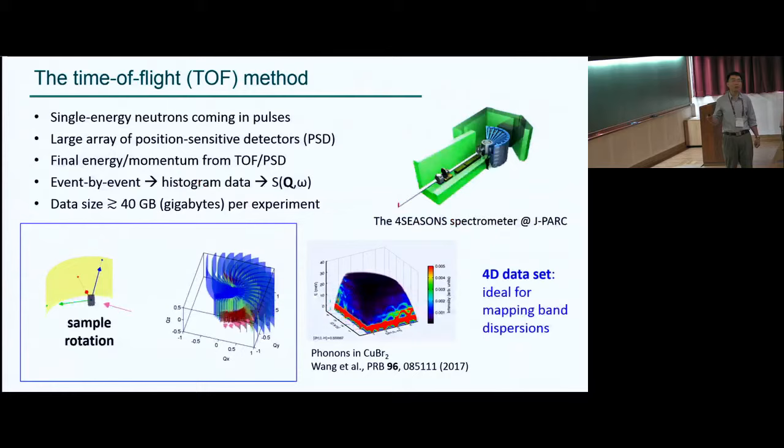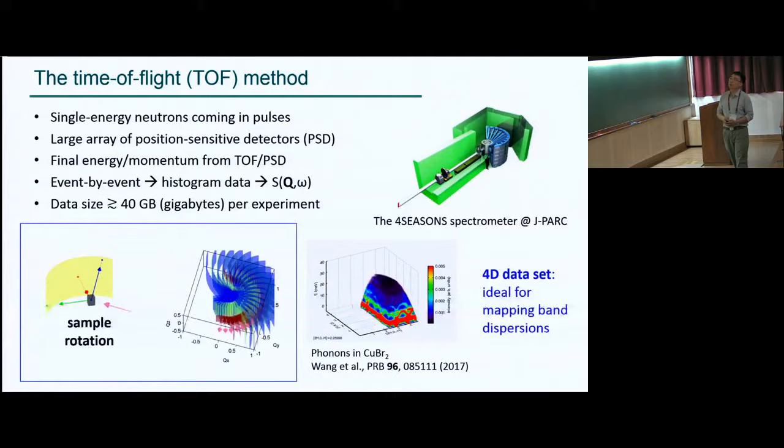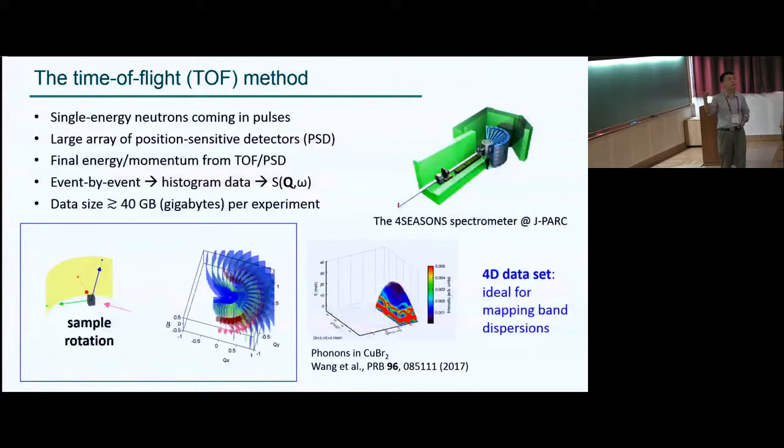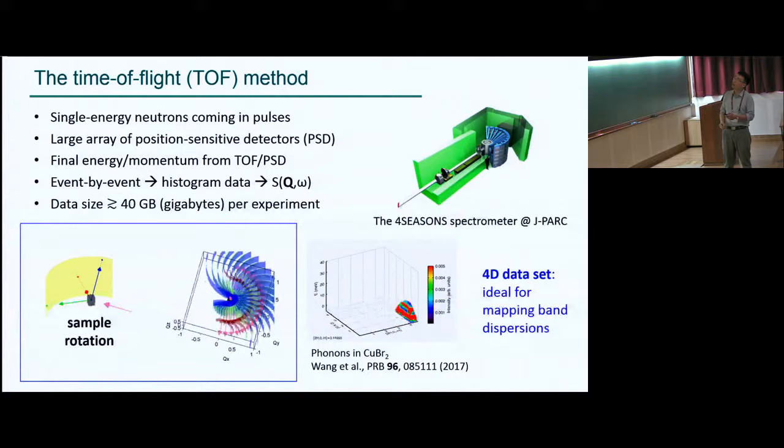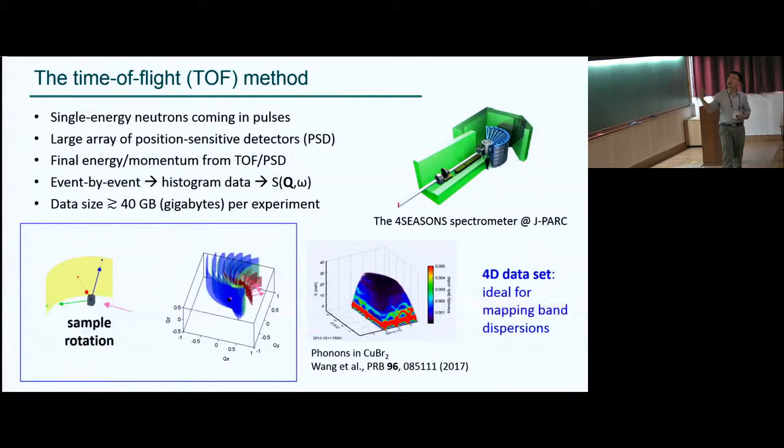And the way how we measure it is by using the so-called time-of-flight method, which is a modern fashion of doing inelastic neutron scattering. And let me walk you through that a little bit. So on this 4SEASONS spectrometer at J-PARC facility in Japan, we essentially hit the sample, a single crystal sample, with pulses of monochromated neutron beam, so a single energy impulse. And after the sample, there is this huge wall of detector. There are many pixels installed in this detector array, and every pixel knows where it is, and it will be able to time how long it takes from the neutron to travel to the sample, hit the sample, and then travel to the detector.